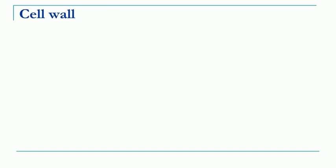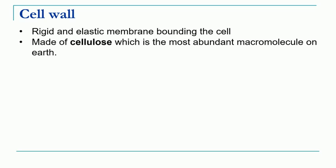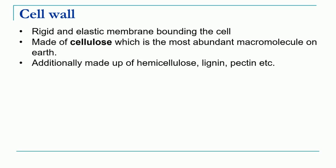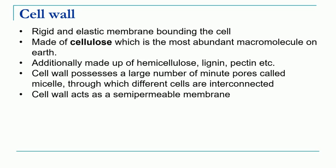The outermost layer of the plant cell is called as cell wall. This cell wall is a rigid and elastic membrane which covers the entire cell. If we see the chemical composition, cell wall is made up of a polysaccharide that is cellulose, which is the most abundant macromolecule present on the earth. Additionally, cell wall can also be made up of hemicellulose, lignin, pectin, etc. The cell wall possesses a large number of minute pores, also called micelles, through which different adjacent cells are interconnected with each other.